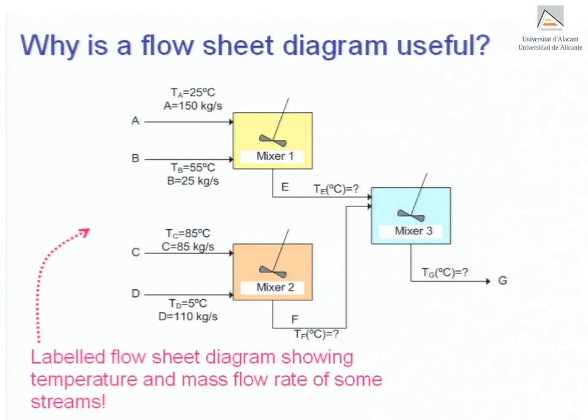This slide shows the same flow sheet as before, but now labeled with the temperature and mass flow rates of some streams. It is easy to spot that there is no information about temperature and mass flow rates for streams E, F and G.